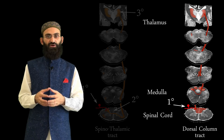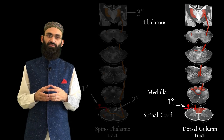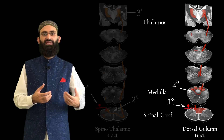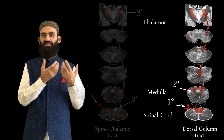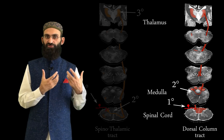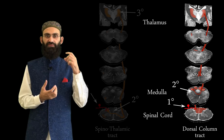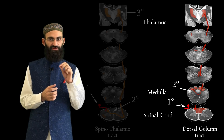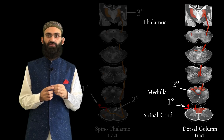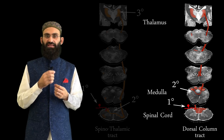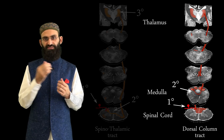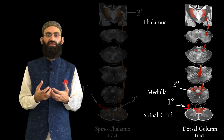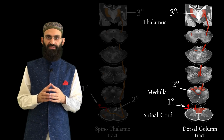For the dorsal column tract, second-order neurons are located in the brainstem in the medulla. First-order neurons ascend in the spinal cord on the same side as the dorsal column tract — as fasciculus gracilis and fasciculus cuneatus — until reaching the lower medulla, where nucleus gracilis and nucleus cuneatus are located. Axons of these second-order neurons then cross the midline and ascend as the medial lemniscal pathway, with third-order neurons again located in the thalamus.